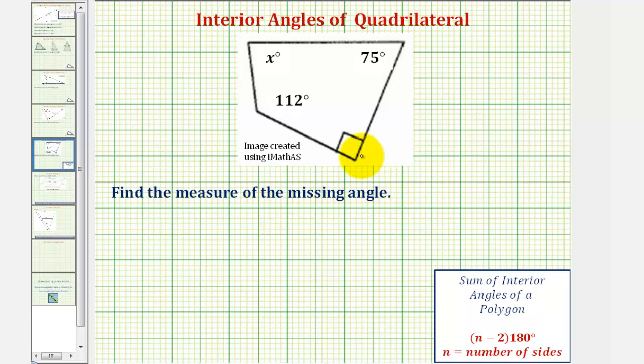We want to find the measure of the missing angle, where the missing angle is angle x here, an interior angle of a quadrilateral.